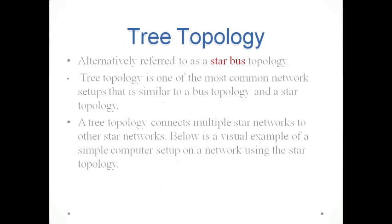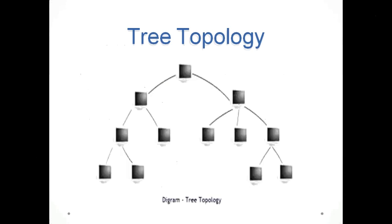Tree topology, alternatively referred to as star-bus topology, is one of the most common network setups, similar to both bus and star topology. A tree topology connects multiple star networks to other star networks. It is a tree-like structure where one system is connected with another system in a hierarchical manner.